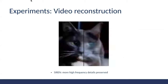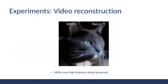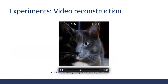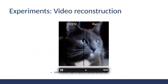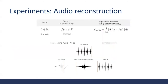For video reconstruction, SIREN maps a time-pixel coordinate to an RGB value at that time, directly supervised by the ground truth pixel values, and fits fine details significantly better than the ReLU MLP. For audio reconstruction, the network maps a time point t to an amplitude, supervised by the ground truth amplitude. SIREN is the only architecture to recover the audio correctly.